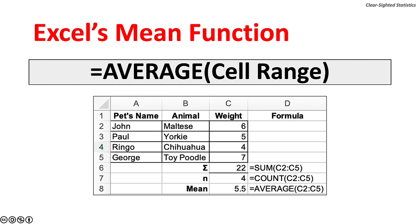In this table, the weight of lapdogs are listed: John the Maltese weighs six pounds; Paul is a five-pound Yorkie; Ringo, a four-pound Chihuahua; and George, a seven-pound toy poodle. Cell C8 shows the results of the AVERAGE function — the mean weight is 5.5 pounds. In cell C6, the SUM function shows the sum of the four weights, 22 pounds. In cell C7, the number of variables, four, is found using the COUNT function.